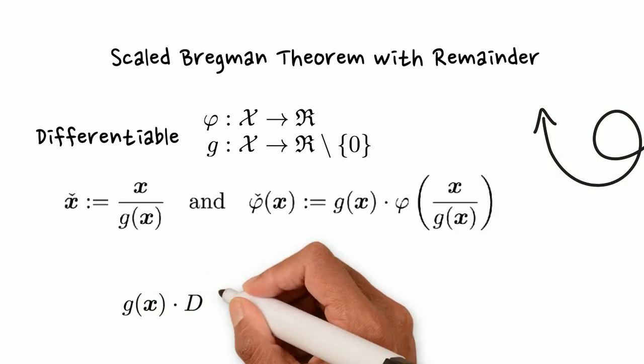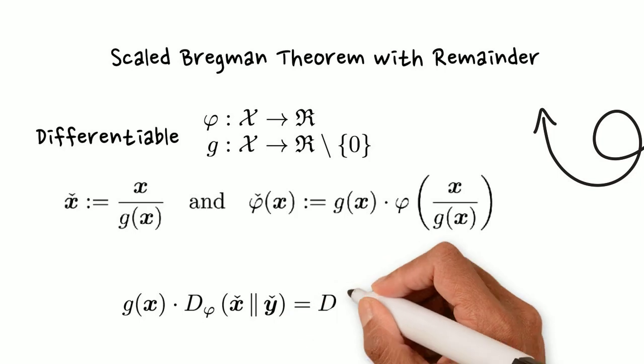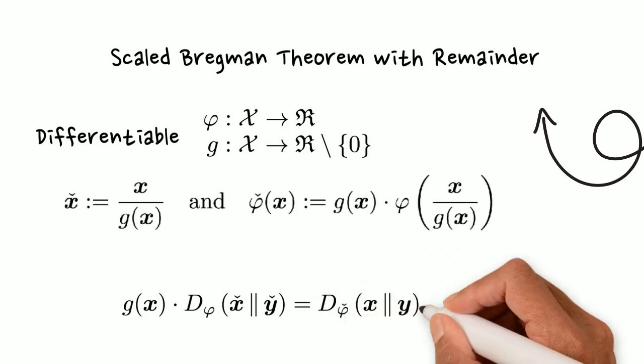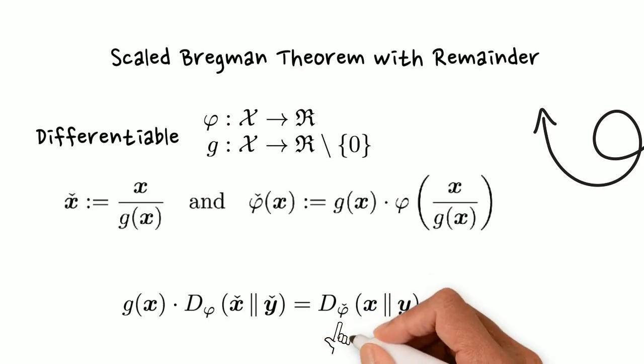Our theorem relates the Bregman distortion on the normalized data to the Bregman distortion on the unnormalized data, except the latter now has a different generator. The new part compared to 2016 is a remainder term which is a conformal divergence.